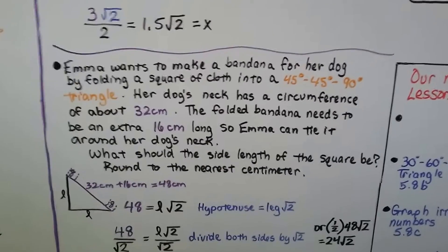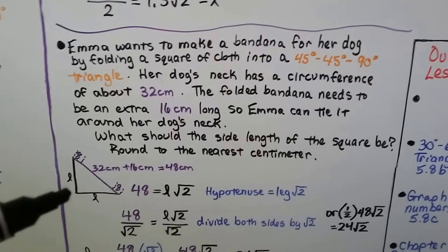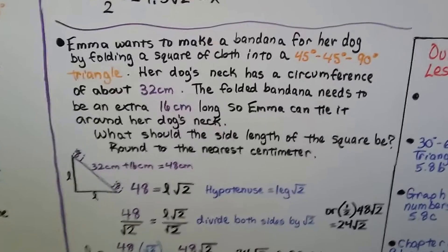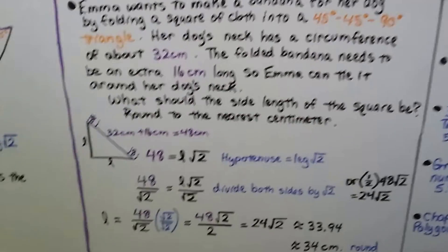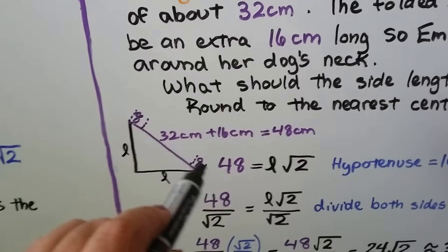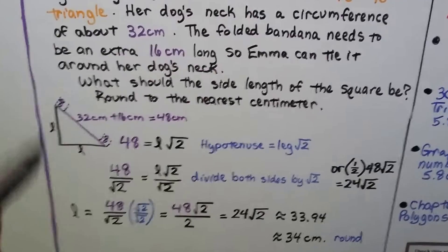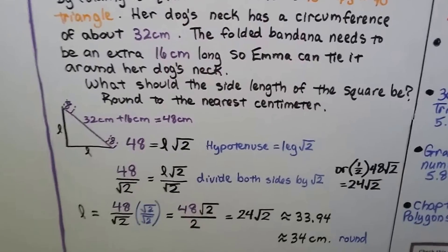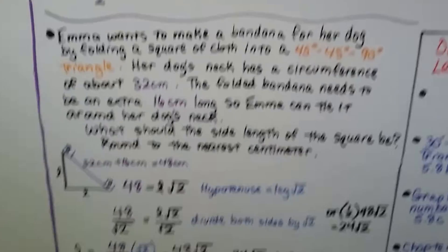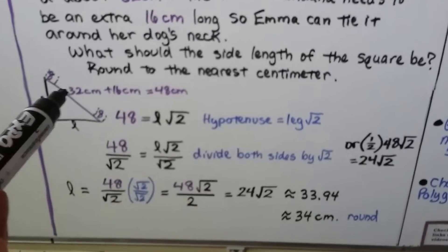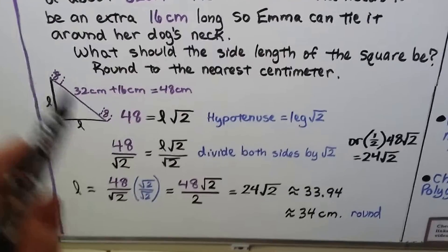Emma wants to make a bandana for her dog by folding a square cloth into a 45-45-90 triangle. Her dog's neck has a circumference of about 32 centimeters, and the folded bandana needs to be an extra 16 centimeters long so Emma can tie it — about 8 centimeters on each side. We need to find the side length of the square and round to the nearest centimeter. So the hypotenuse needed is 32 + 16 = 48 centimeters.